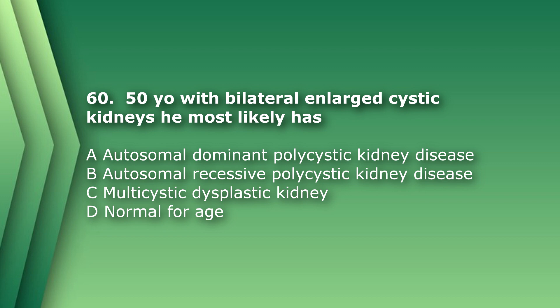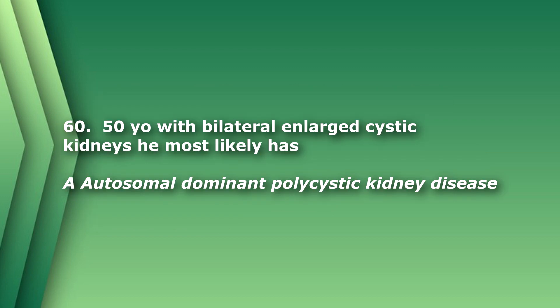Question 60: A 50-year-old with bilateral enlarged cystic kidneys most likely has: A) autosomal dominant polycystic kidney disease, B) autosomal recessive polycystic kidney disease, C) multicystic dysplastic kidney, D) normal for age. The answer is A. Autosomal dominant PKD, also called adult polycystic kidney disease, is sometimes not found until later life, whereas autosomal recessive PKD is less common, presents earlier, and progresses to end-stage renal disease usually by age 15.